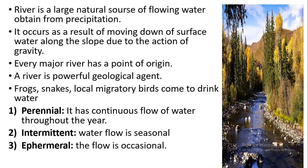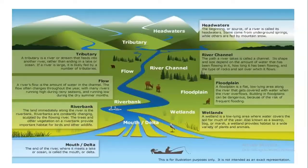A perennial river has a continuous flow of water throughout the year. An intermittent river has seasonal water flow. An ephemeral river has only occasional flow. When we talk about the structure of the river, rivers are split longitudinally into three parts.